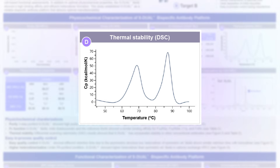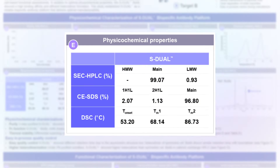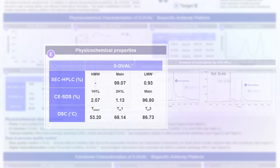Furthermore, to assess the thermal stability of the antibody, differential scanning calorimetry was conducted, yielding values comparable to those of a conventional antibody. The physicochemical characteristics of S-DUAL, as previously mentioned, are summarized in figure E.